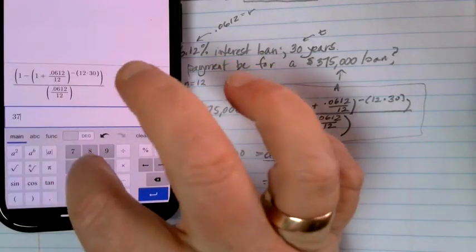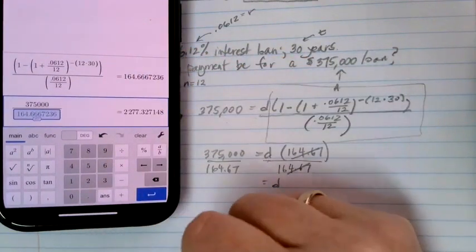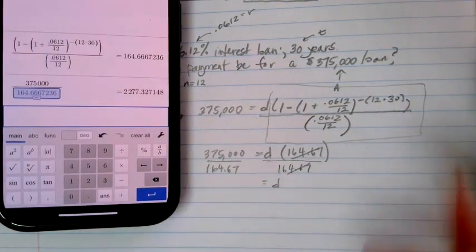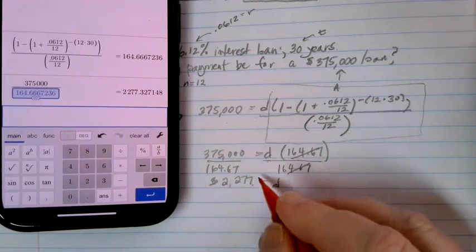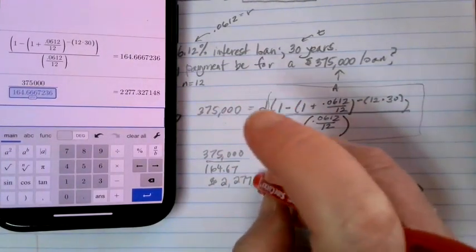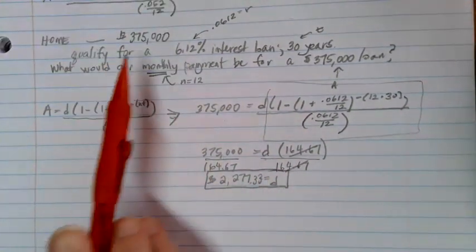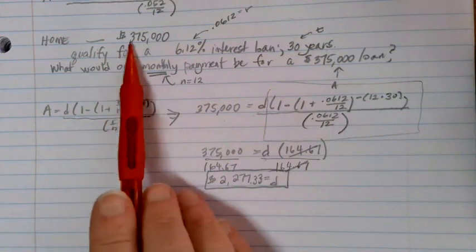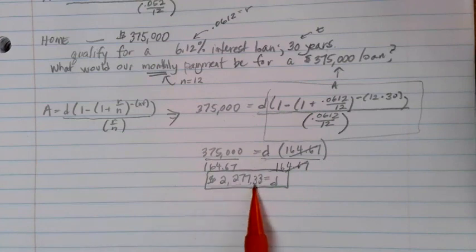That gets the D alone, and I'll get my answer over here on the calculator. We want to take $375,000 for the home loan and divide it by that last answer there, that 164.67. And when I do that, I come up with a D value of $2,277.33. So if I'm at this percentage rate loan, if I want to buy a $375,000 house on credit, I will be paying $2,277.33 every month for 30 years, but then I'll own the home when I'm done.